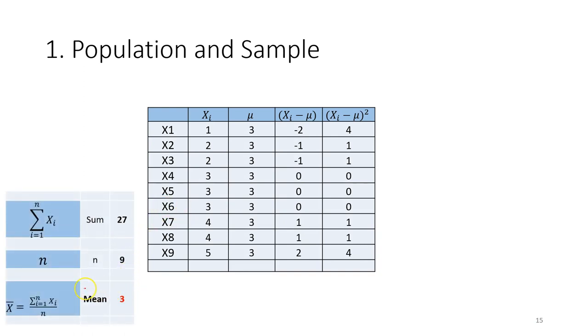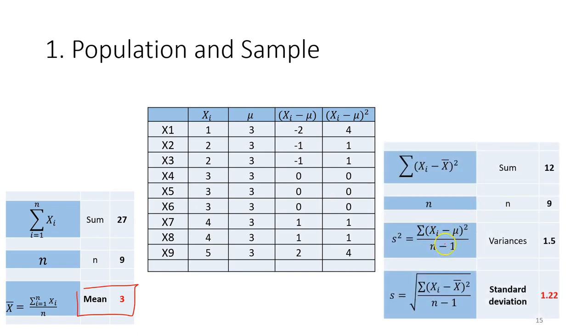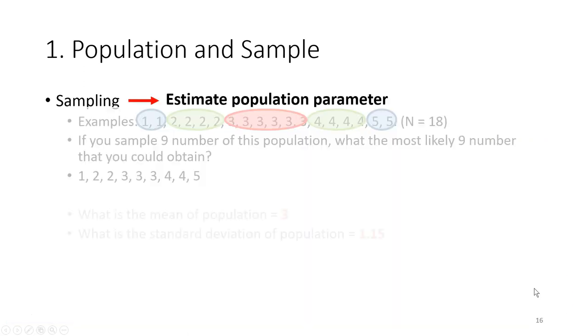For the sample, the mean is 3 and the standard deviation, so the formula is slightly different. So we have to divide the sum of squares with the degree of freedom. So it's the number of observations, in this case is 9, so it's 9 minus 1 equals 8. So you have to divide the sum of squares by 8 to get the variance. After that you square root the variance to get the standard deviation.